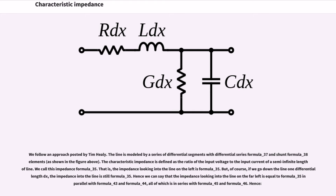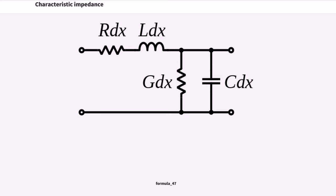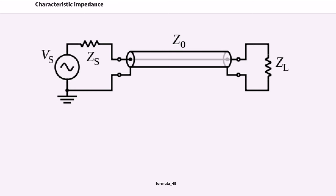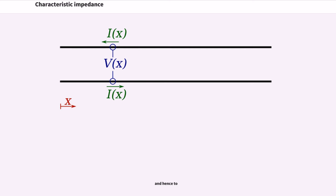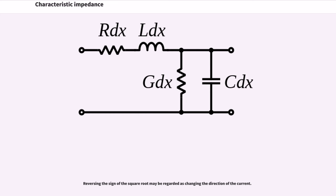Hence we can say that the impedance looking into the line on the far left is equal to Formula 35 in parallel with Formula 43 and Formula 44, all of which is in series with Formula 45 and Formula 46. Hence Formula 47, Formula 48, Formula 49. The term above containing two factors of Formula 50 may be discarded, since it is infinitesimal in comparison to the other terms, leading to Formula 51, and hence to Formula 52. Reversing the sign of the square root may be regarded as changing the direction of the current.